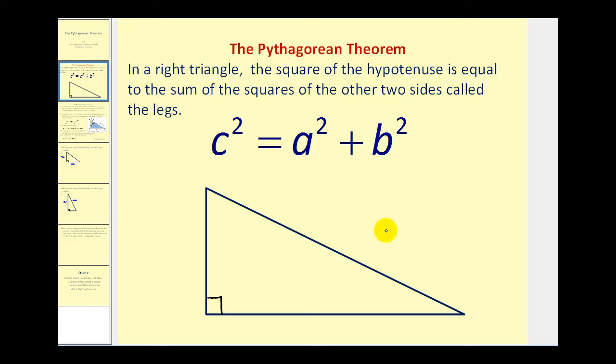So the hypotenuse is the longest side of a right triangle. It's also opposite the right angle and it must be labeled side C. The reason that's so important is notice that C is on one side of the equation by itself.